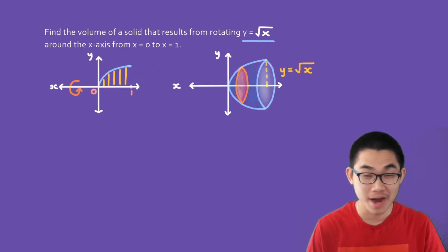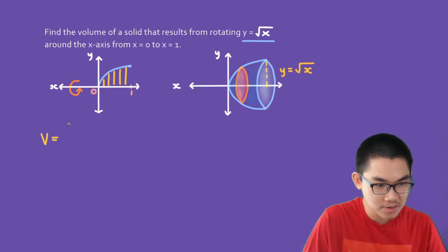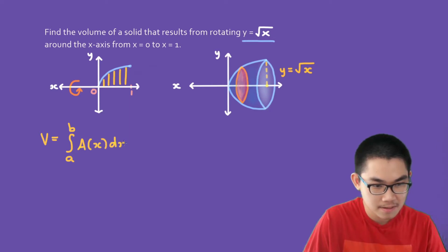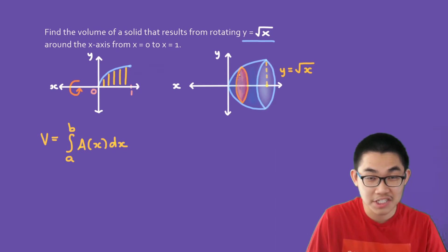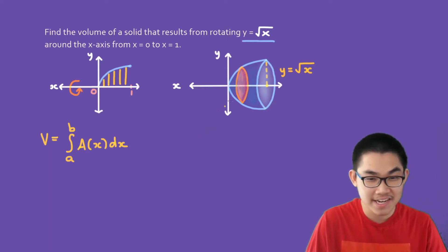Step number one: write down the volume formula. V is equal to the integral from a to b of A(x) dx, where A(x) is the area of the cross section. Since the cross section is on the x-axis, it is easier to integrate with respect to x. Now let's find the area of this circular cross section.